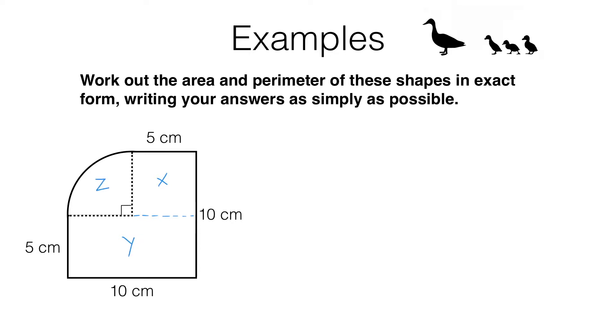Let's consider this shape here. It looks like a square but let's just check. This length is 10 centimeters and this is 5 centimeters, which means that this section here has to be 5 centimeters as well. So the area of X is 5 times 5, which gives us 25 centimeters squared.